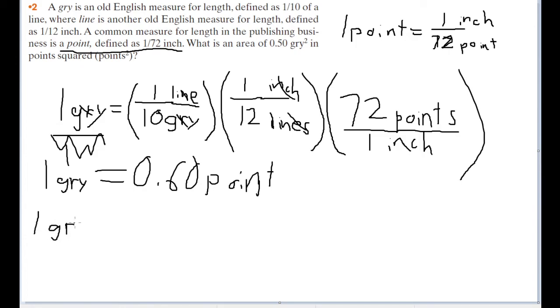So let's just square both sides. So one gris squared, if we square the gris, one squared is just still one. But it's going to be equal to 0.6 points squared. Which, if you square the 0.6, is equal to 0.36 points squared.